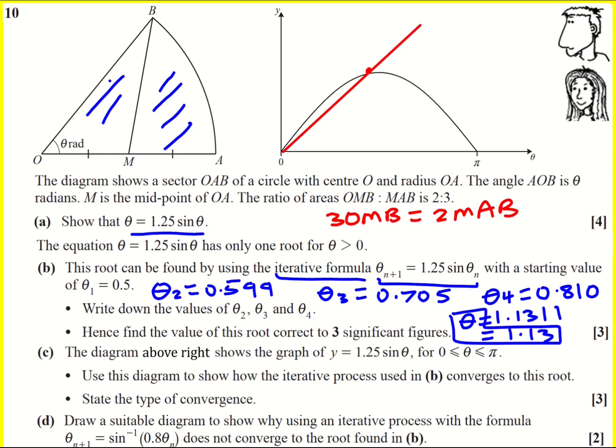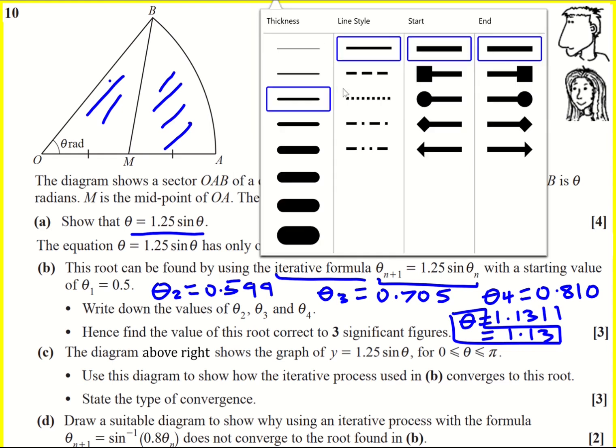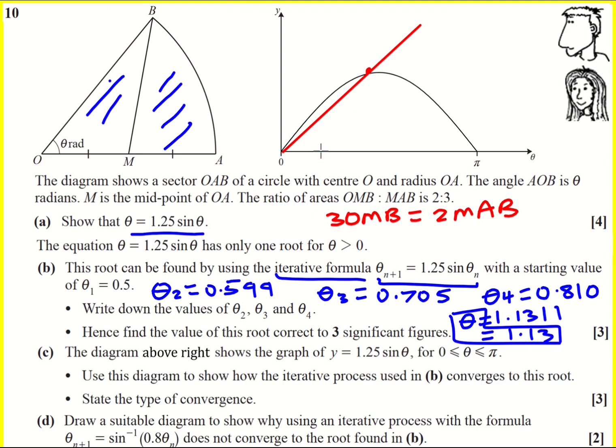And so what we do is we put in a starting value of 0.5 in this case. And then we put it into our function and get a new value out. I think I probably should use a ruler here and a dotted or dashed line. So we put this in and we get a new value out. In fact, that was our 0.599. And then that becomes our new value that we put in. So basically we go horizontally, and this is now, this becomes our value of x.